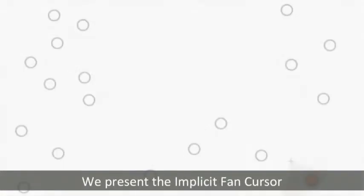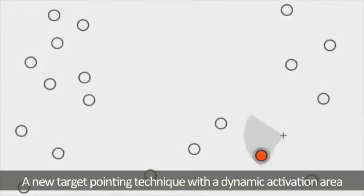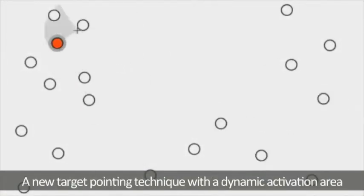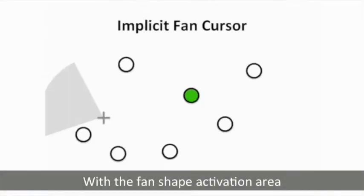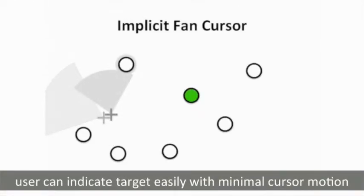We present the implicit fan cursor, a new target pointing technique with a dynamic activation area. With the fan shape activation area, users can indicate targets easily with minimal cursor motion.